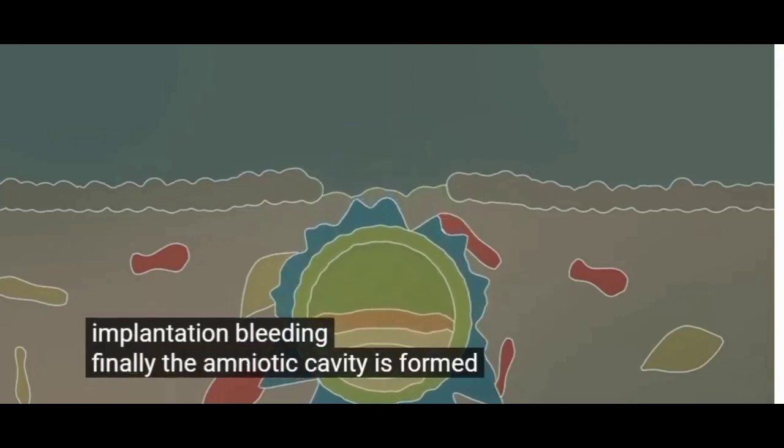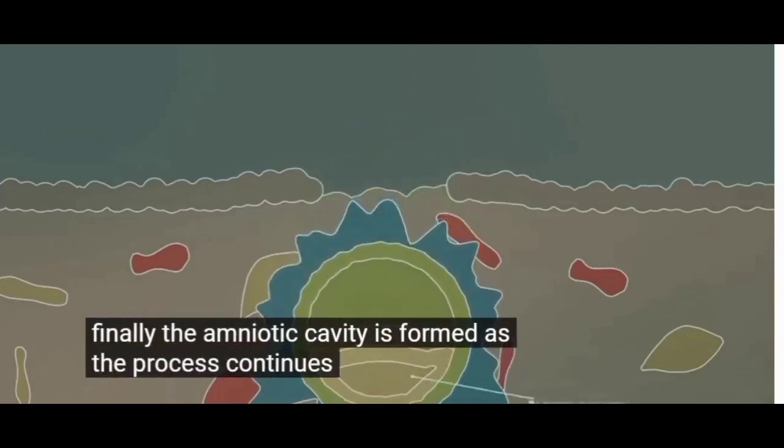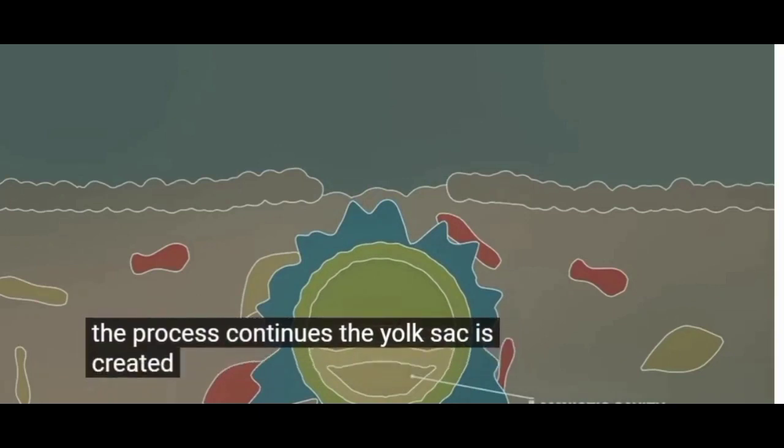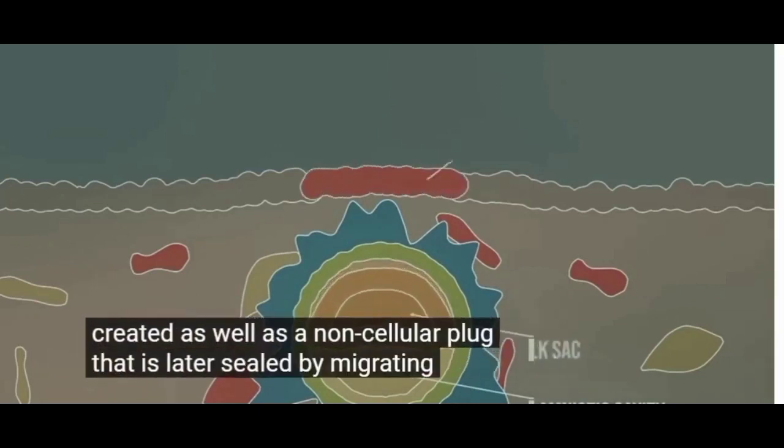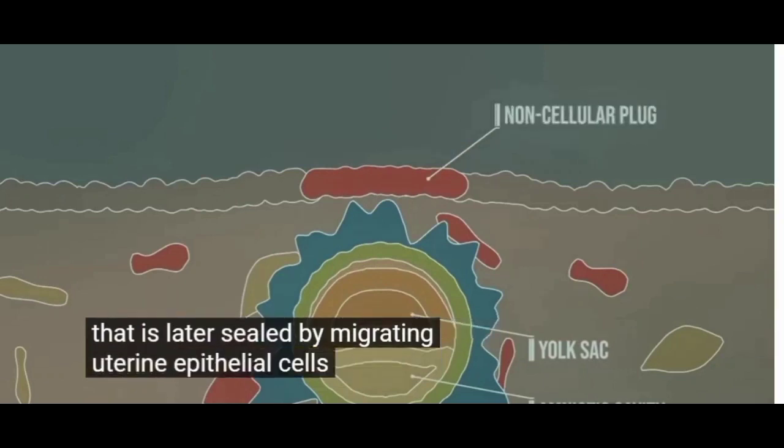Finally, the amniotic cavity is formed. As the process continues, the yolk sac is created, as well as a non-cellular plug that is later sealed by migrating uterine epithelial cells.